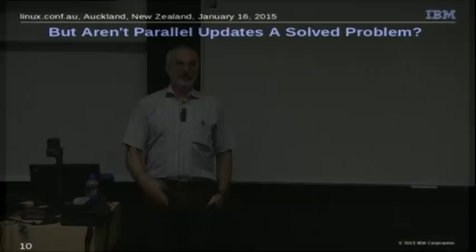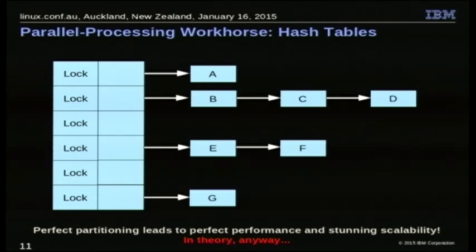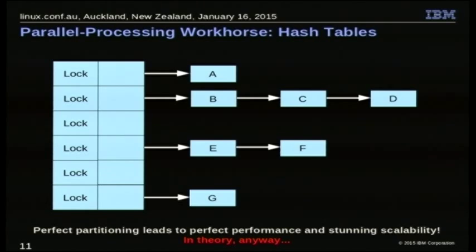One thing you might say is: we've been doing parallel updates for longer than I've been alive, and that's saying something. Why is this a problem? Just use a hash table. You can map a tree into a hash table, partition it up, have a lock on each chain, hash the stuff across, and get perfect scalability and stunning performance. In theory.